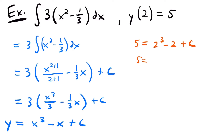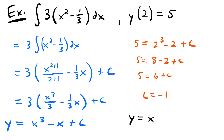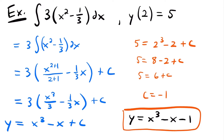Solving for c: 5 equals 8 — since 2 cubed is 8 — minus 2 plus c. So 5 equals 6 plus c. Subtracting 6 from both sides, c is equal to negative 1. We can plug that into our general solution to get the particular solution: y equals x cubed minus x minus 1. This is our final answer for this indefinite integral given the initial condition.